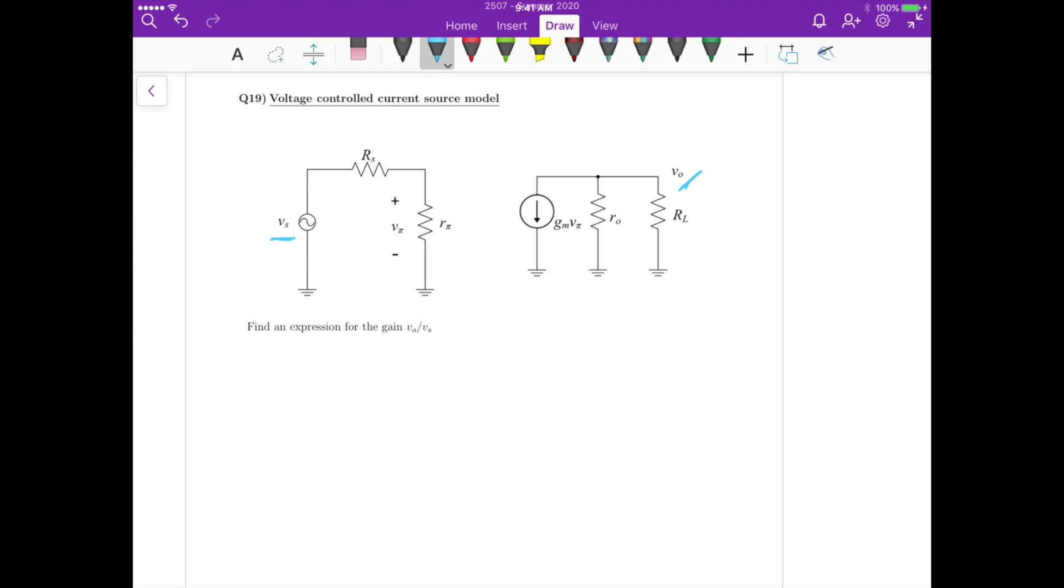First, we know that the current forced by this dependent current source is GM, a transconductance, times Vpi. This Vpi controls the magnitude, along with the transconductance GM, of the current flowing in this second circuit. In some way, they are coupled. There's a link between these two circuits because of this dependent current source.